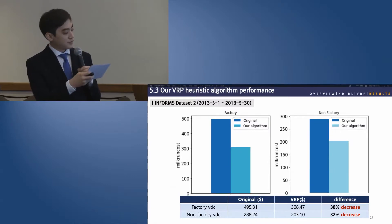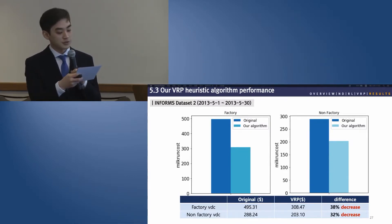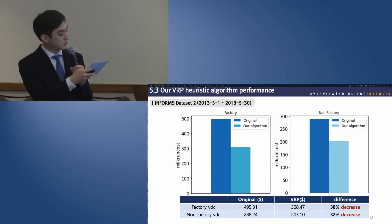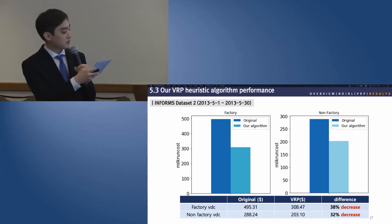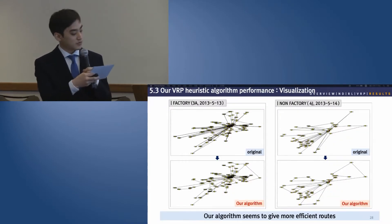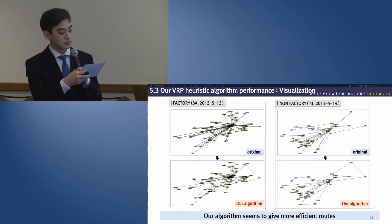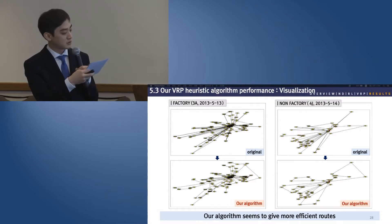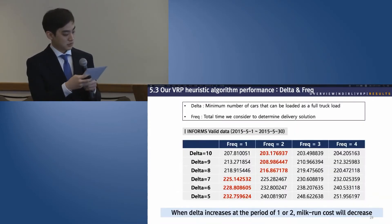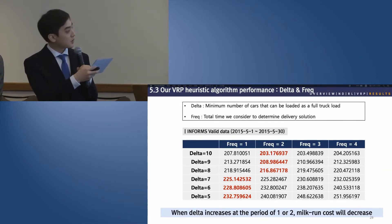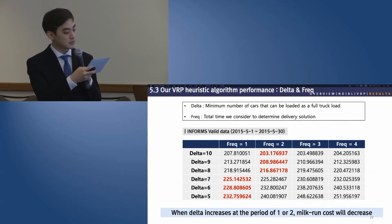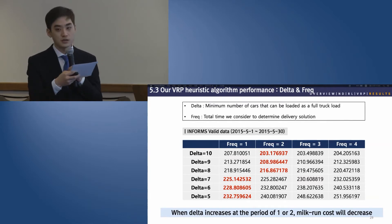Here is our VRP heuristic performance. We applied our VRP heuristic to dataset 2 and found that costs are down nearly 38% and 32% in both cases. The visualization of the delivery process shows that our heuristic achieved a better solution on the same set of dealers compared to historical results. This heuristic has adjustable parameters, and we can get better solutions by tuning them, implying our algorithm can be adapted to different situations and data.